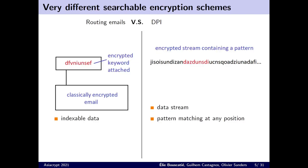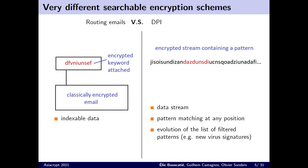Searchable encryption is a name that is used for very different schemes. In the case of email routing, the search is performed on encrypted keywords that are attached to the messages. But in the case of deep packet inspection, it is somewhere in the stream of the traffic that the pattern may appear. Another difference is that in the first case, keywords are known in advance, whereas in deep packet inspection, the list of patterns is evolving in order to search new viruses, for instance.